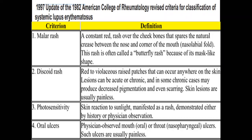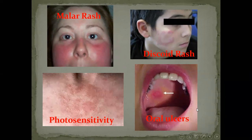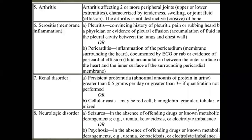The criterion of oral/nasopharyngeal ulcers counts as one ACR criterion. Pictures show: malar rash on the cheekbones, discoid rash with violaceous color and scarring, photosensitivity rash on sun-exposed areas, and oral ulcers. That makes four mucocutaneous criteria. Then we have two plus two more: arthritis and serositis, and kidney and neurologic involvement.